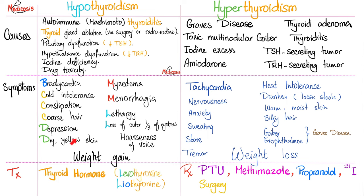Symptoms: In hypothyroidism, everything is slow. In hyperthyroidism, everything is super fast. With hypothyroidism: the heart is slow — bradycardia; you can't tolerate cold — cold intolerance; you're always cold; you're constipated; your gut is not moving; coarse hair; depression; dry yellow skin — myxedema; menorrhagia; lethargy; loss of the outer one-third of the eyebrow; hoarseness of voice; and weight gain. You're sad, lazy, obese, slow, depressed, constipated, cold, and lethargic.